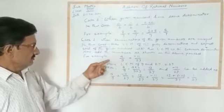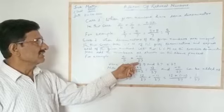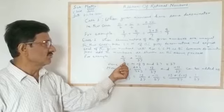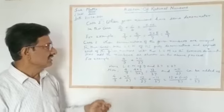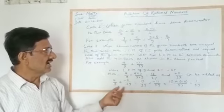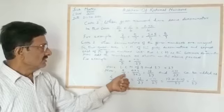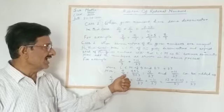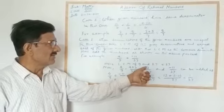Here, 4/9 plus (−11/27). We observe that both denominators are different — the first denominator is 9 and the second is 27. The LCM of 9 and 27 is 27. Now we convert 4/9: since we need to change 9 into 27, we multiply both 9 and 4 by 3, giving us 12/27.